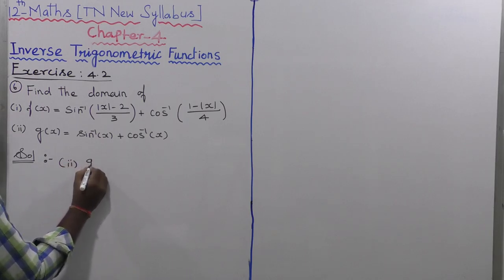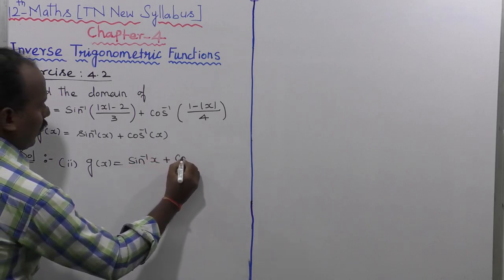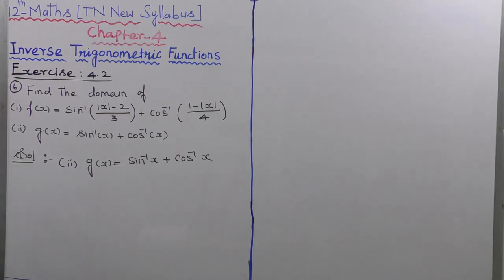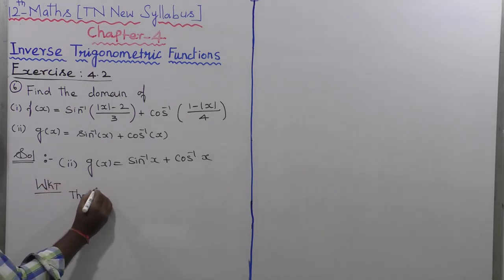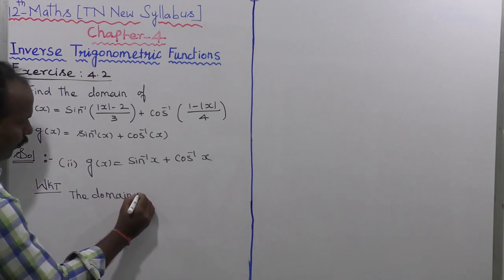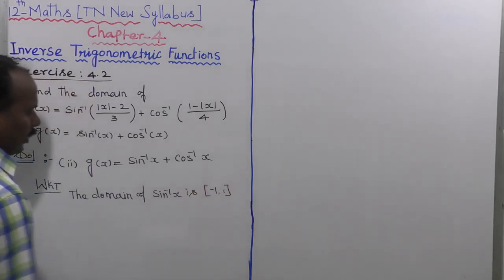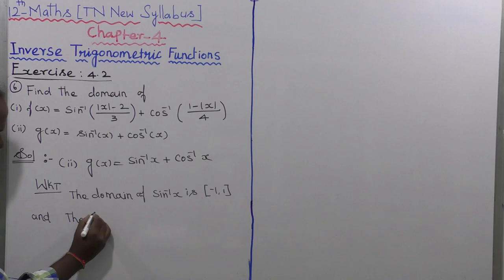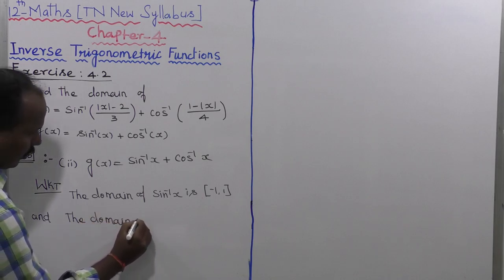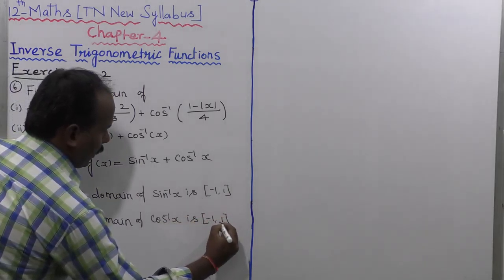So take the second subdivision: g of x equal to sin inverse of x plus cos inverse of x. We know that the domain of sin inverse of x is the closed interval minus 1 comma plus 1. And also the domain of cos inverse of x is minus 1 comma plus 1.